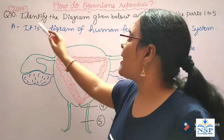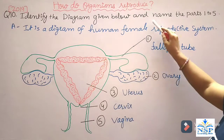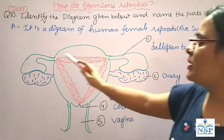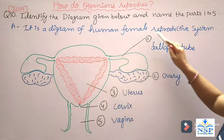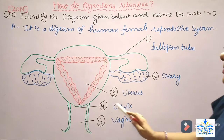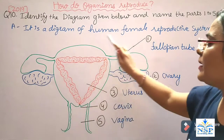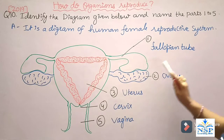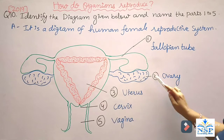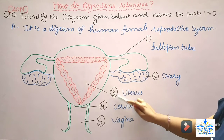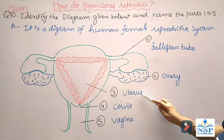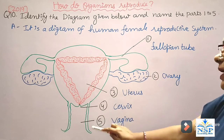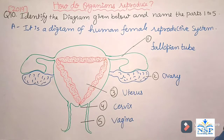The next question is: identify the diagram given below and name the parts 1 to 5. It is a diagram of the human female reproductive system. Part 1 is the fallopian tube. Part 2 is the ovary. Part 3 is the uterus. Part 4 is the cervix. And part 5 is the vagina.